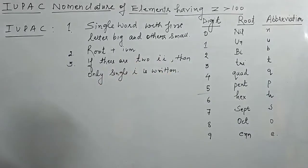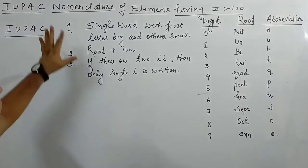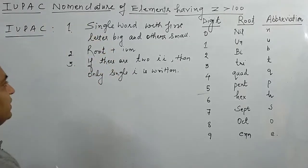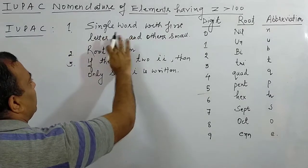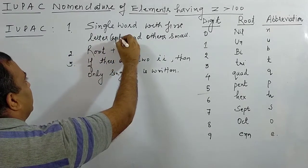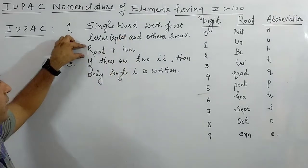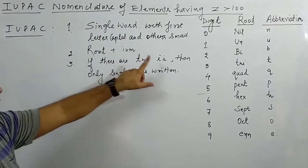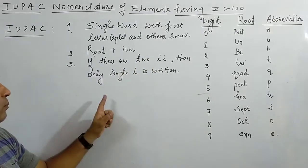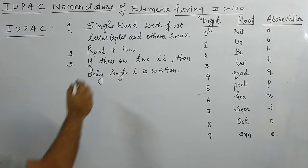So once again — in IUPAC nomenclature, you write a single word, first letter capital, rest small. Then you write the root, end it with IUM, and if you have two continuous small i's coming together, write only one. Now we'll discuss what these roots mean.